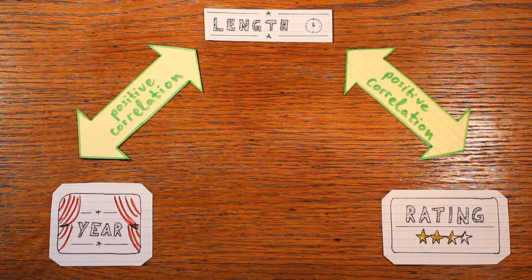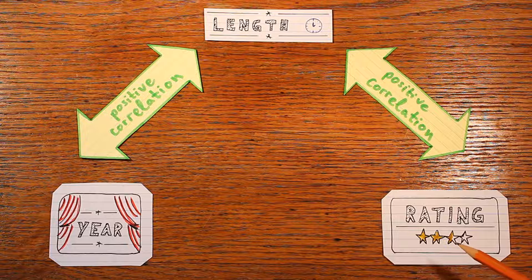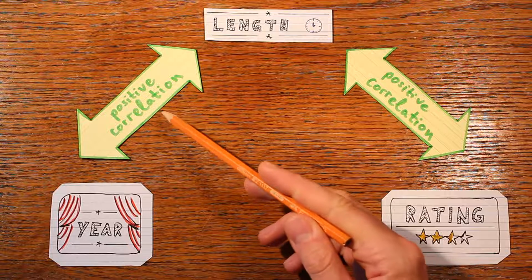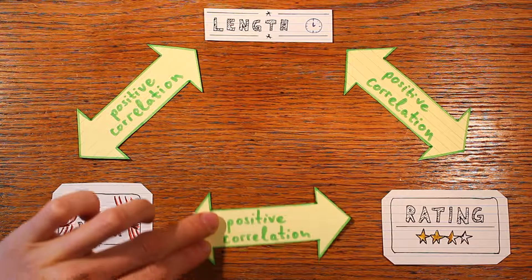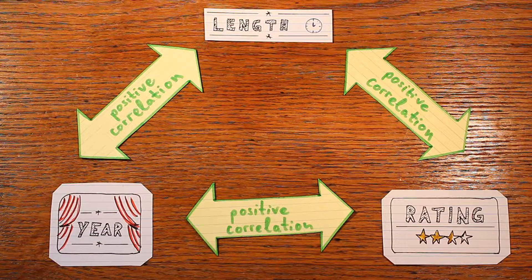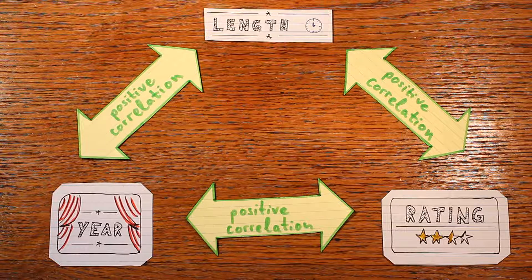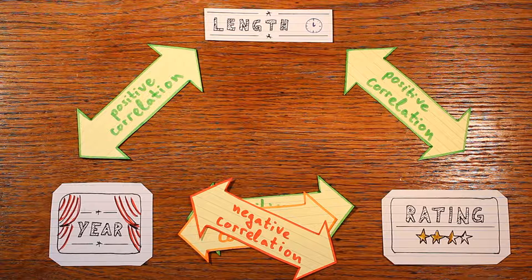So overall you know that newer movies tend to be longer, and longer movies tend to be better. Now does this mean that newer movies tend to be better? In other words, if there's a positive correlation between release year and length, and between length and rating, does this mean there's a positive correlation between release year and rating? The answer is no. In fact, the correlation between release year and rating could be zero or even negative. And that's just terribly paradoxical.